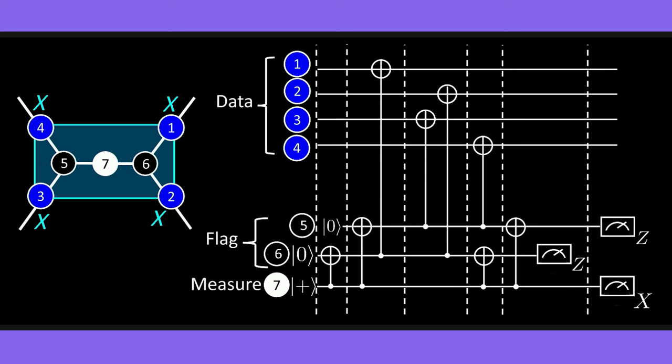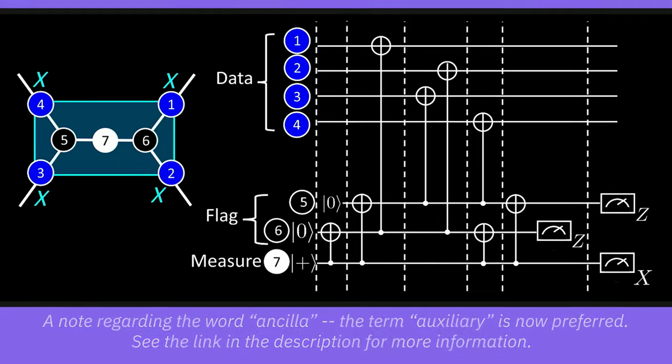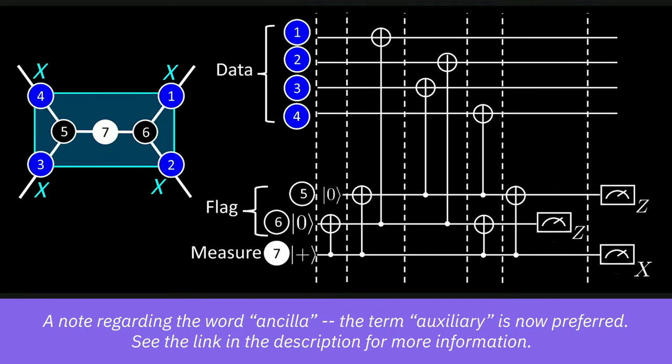Let's start with the bit flips. This is the surface code-like part of the heavy hex code. Here we're measuring the XXXX, that's four x's parity operator, and we're going to do this on a subset of seven qubits. Here we have the quantum information stored in the data qubits, labeled one through four, and we want to map those errors onto the flag qubits, labeled five and six, and then map that further to the ancilla qubit, labeled seven. Here we're only going to measure the flag and ancilla qubits, because we want to preserve the quantum information stored in the data qubits.